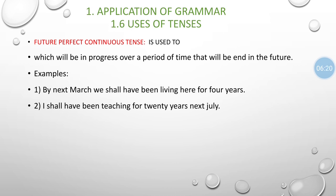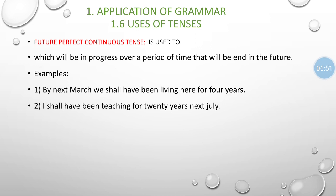Future perfect continuous tense is used for actions which will have started in the future, be partly completed, and still be in progress — remaining partly incomplete. The action is in progress over a period of time that will end in the future. It is partly completed and partly incomplete at that future point.